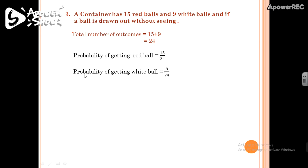The probability of getting a white ball: since the container has only 9 white balls, you have 9 ways of selecting a white ball. So the probability of getting a white ball equals 9/24. In this way, you can calculate the probability of occurrence of any event.